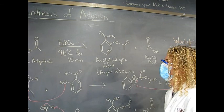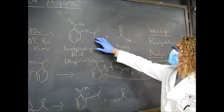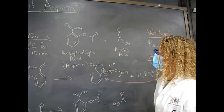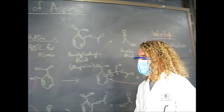We'll be running this reaction at 90 degrees Celsius for about 15 minutes. What we're going to form is this type of ester right here. It's acetylsalicylic acid, which is also known as aspirin, and it will also form acetic acid as a byproduct.